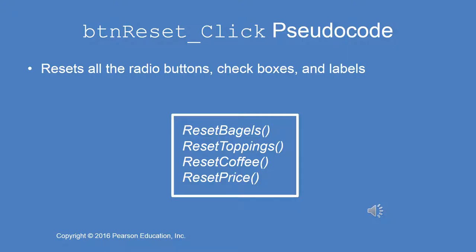The procedure for the reset click event handler resets all the radio buttons, check boxes, and labels. You're going to code four procedures: reset bagels, reset toppings, reset coffee, and reset price. Given what we've learned so far, this should be fairly simple — there are no returns. You're just resetting all of those radio buttons, check boxes, and labels to the default or initial setting.